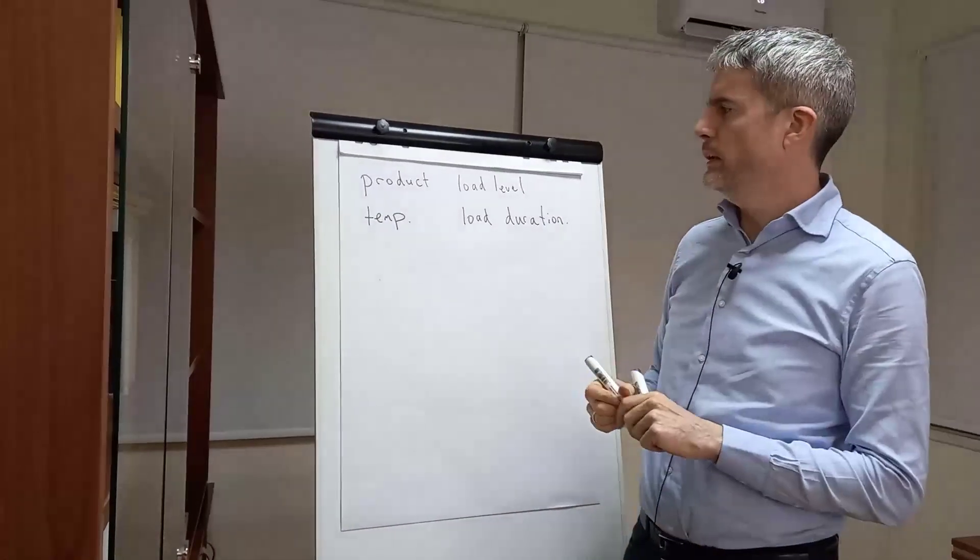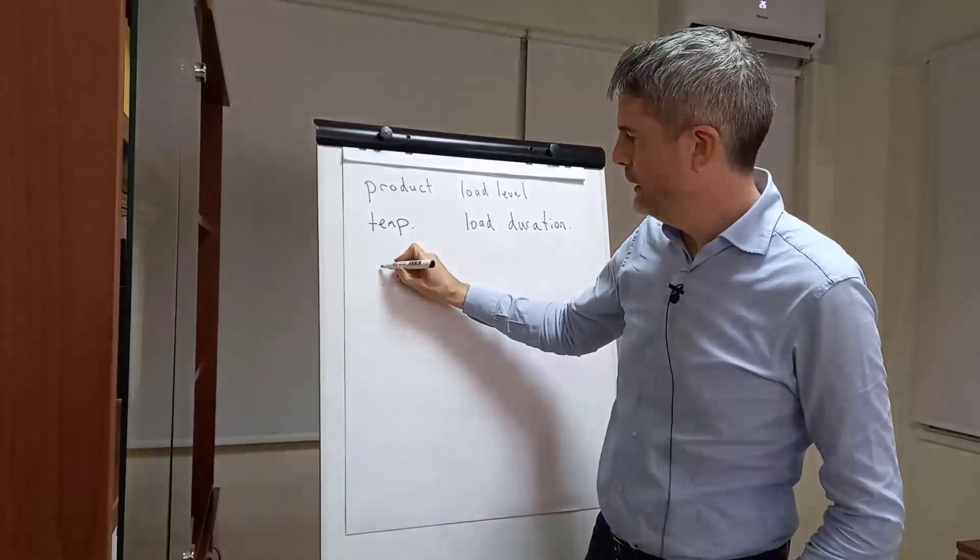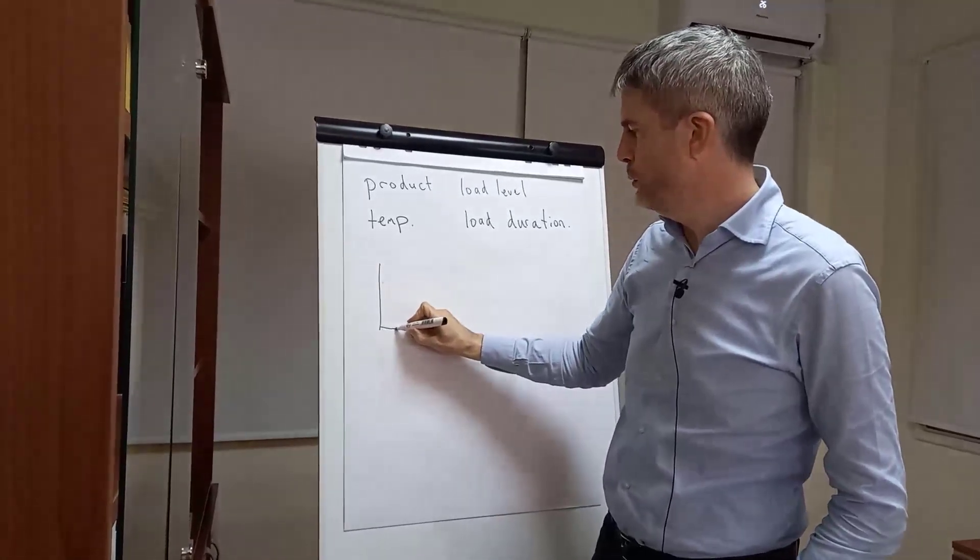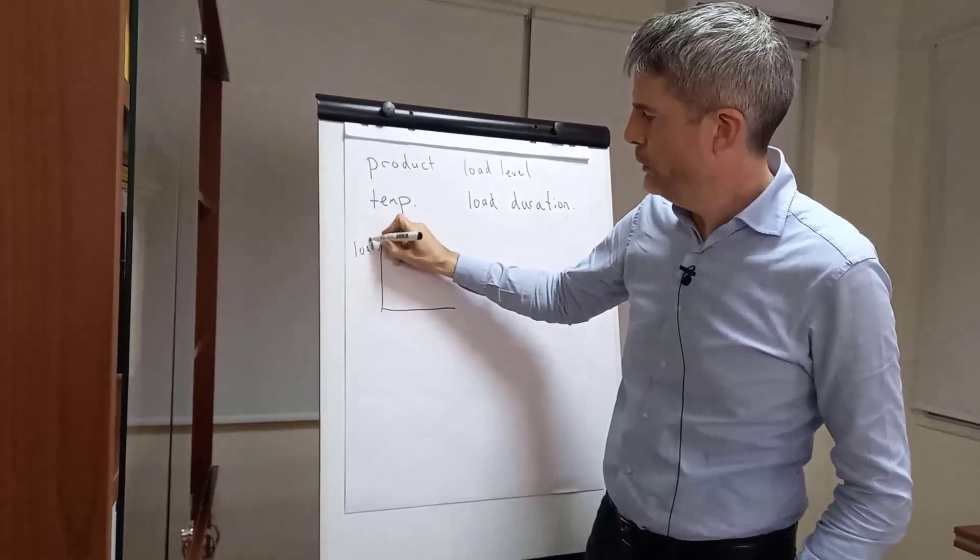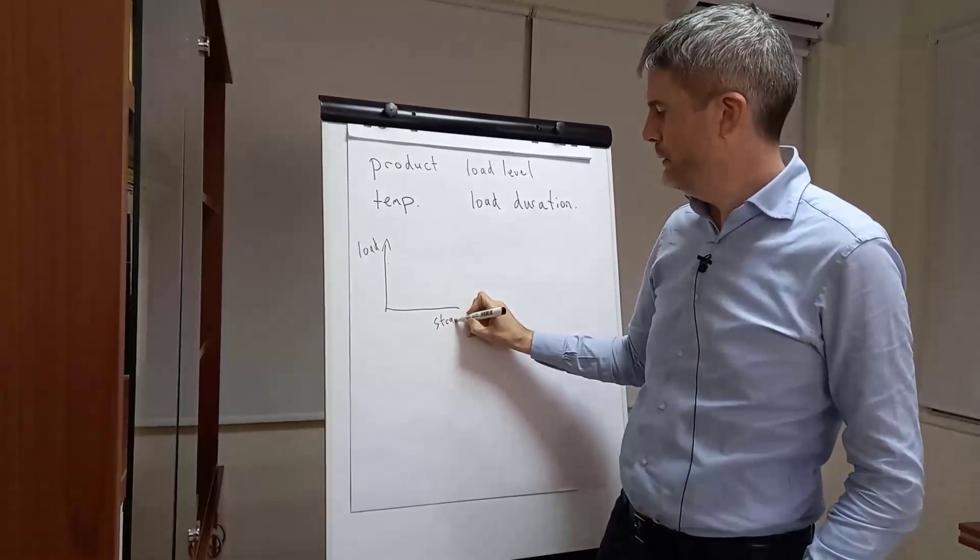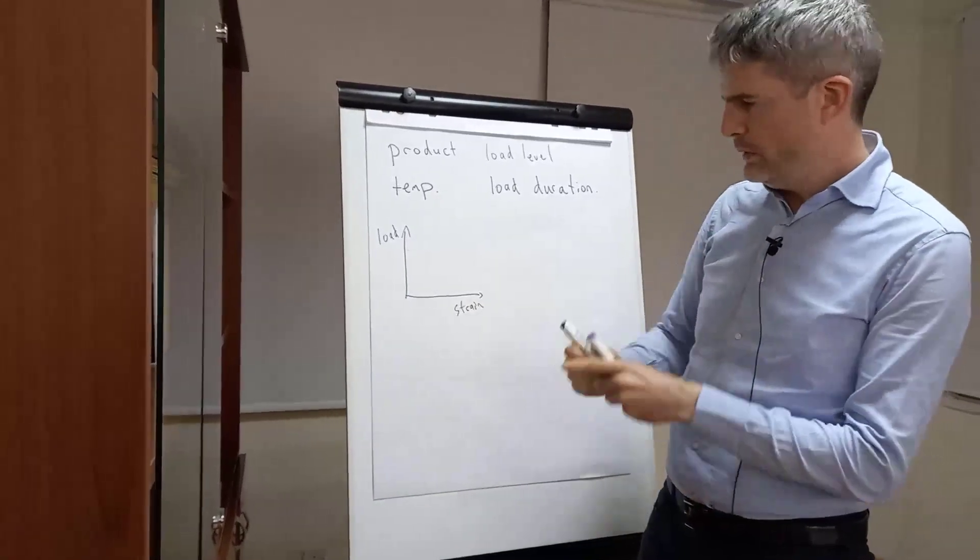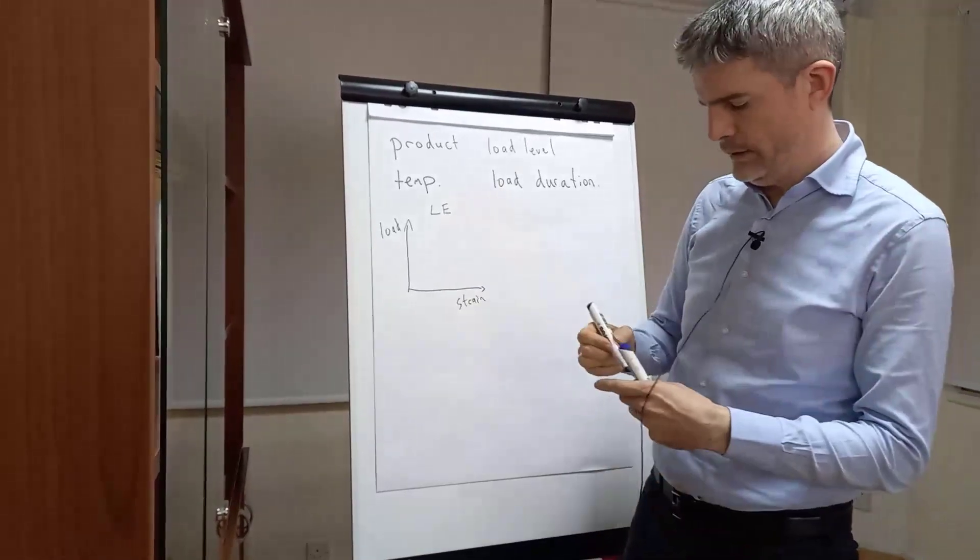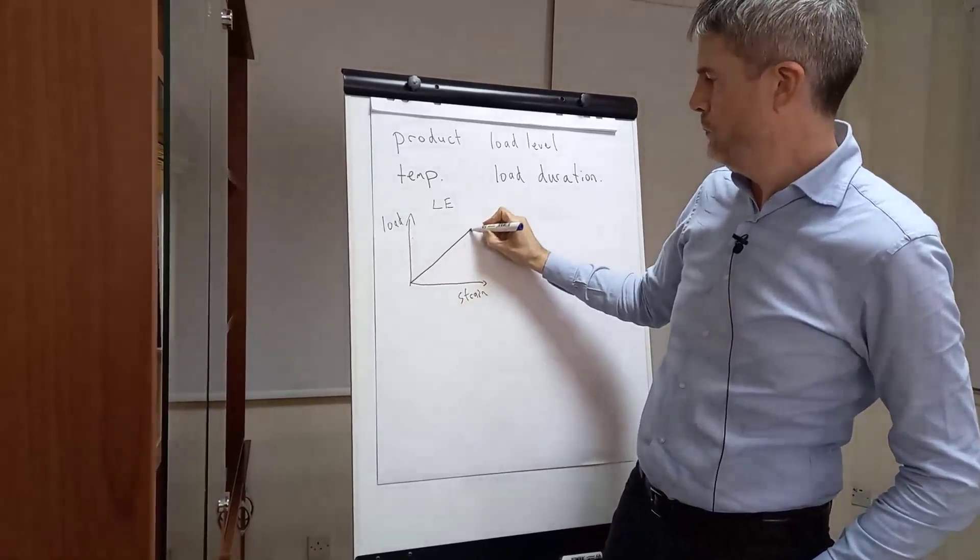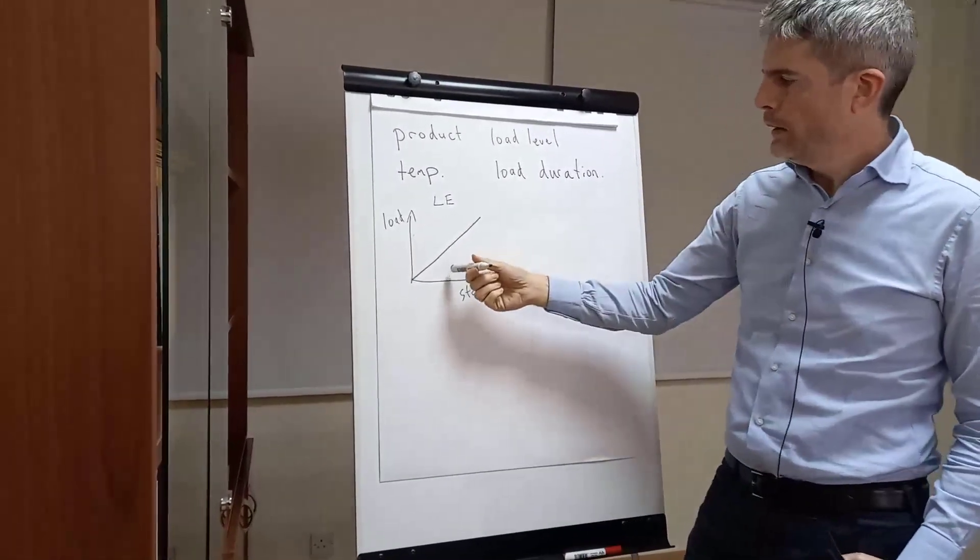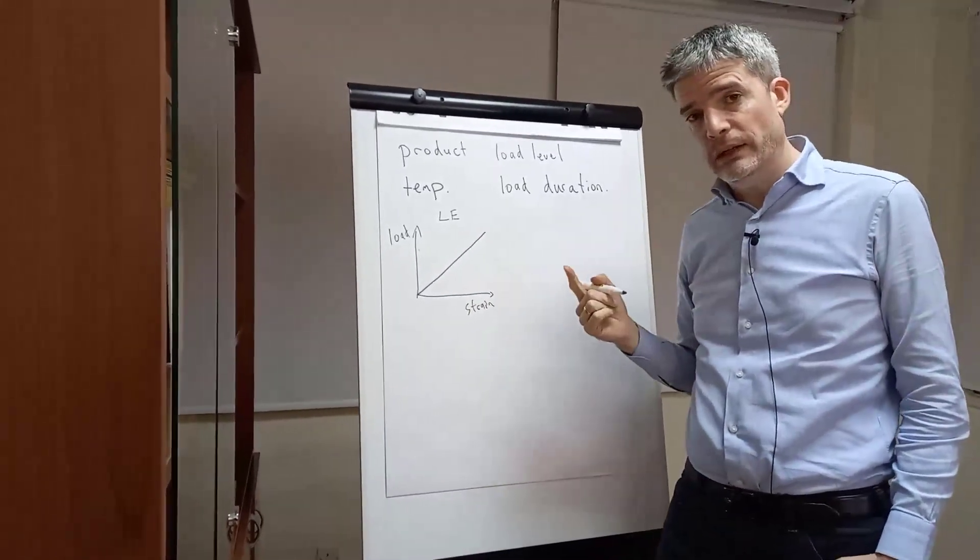Somehow you need to take all that into account in the way that you model the stiffness. So let's look at the most basic way of modeling the stiffness. Let's draw a graph of the tensile load against the tensile strain and represent the behavior that way. So this is linear elastic - you will get a straight line like that.